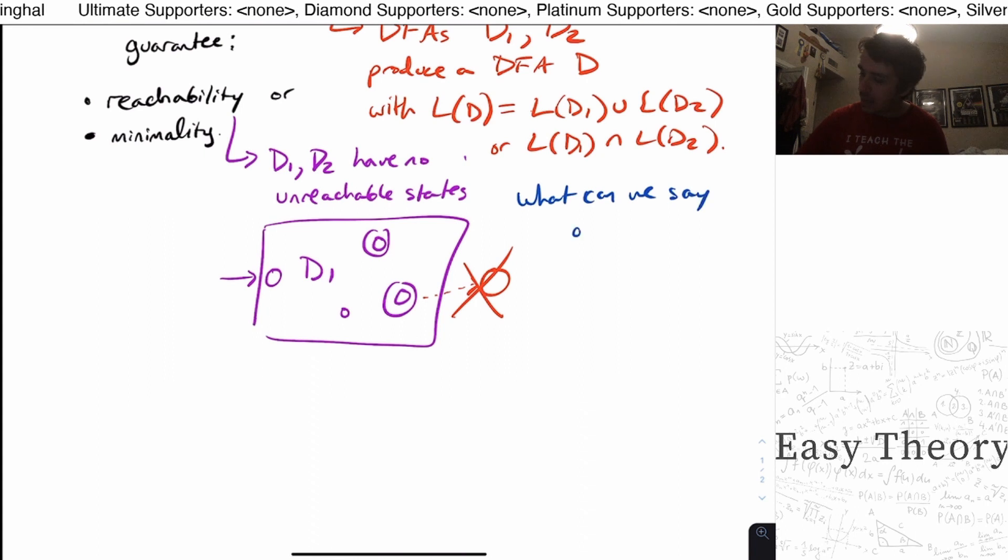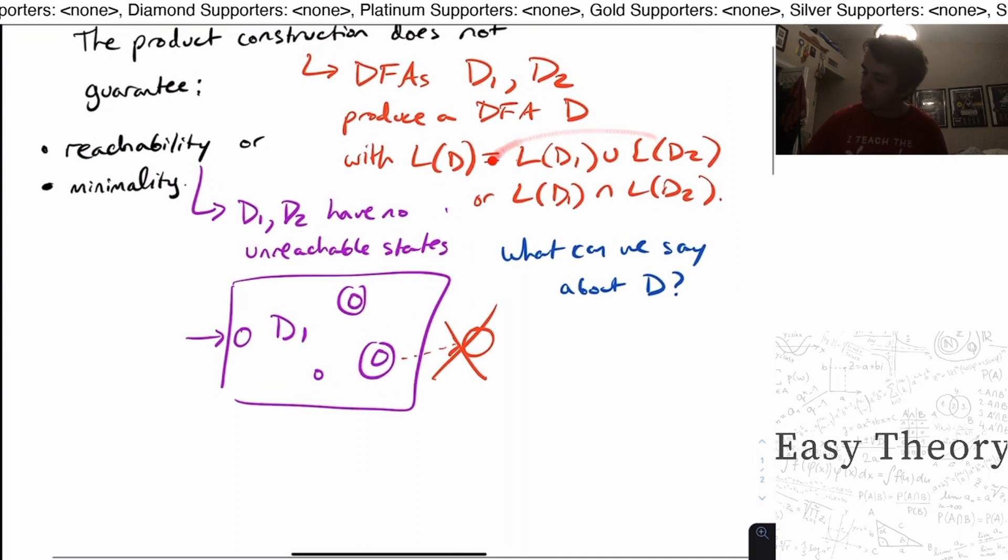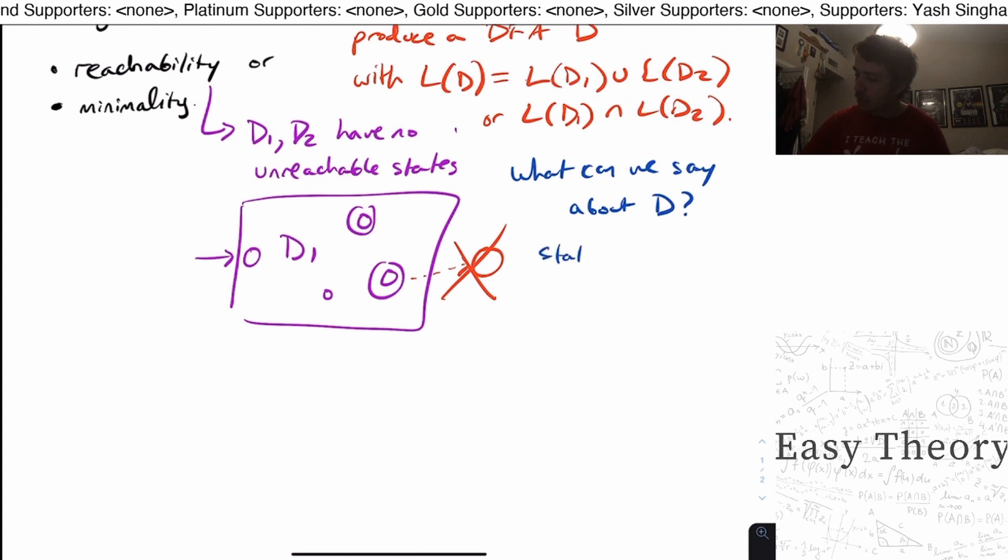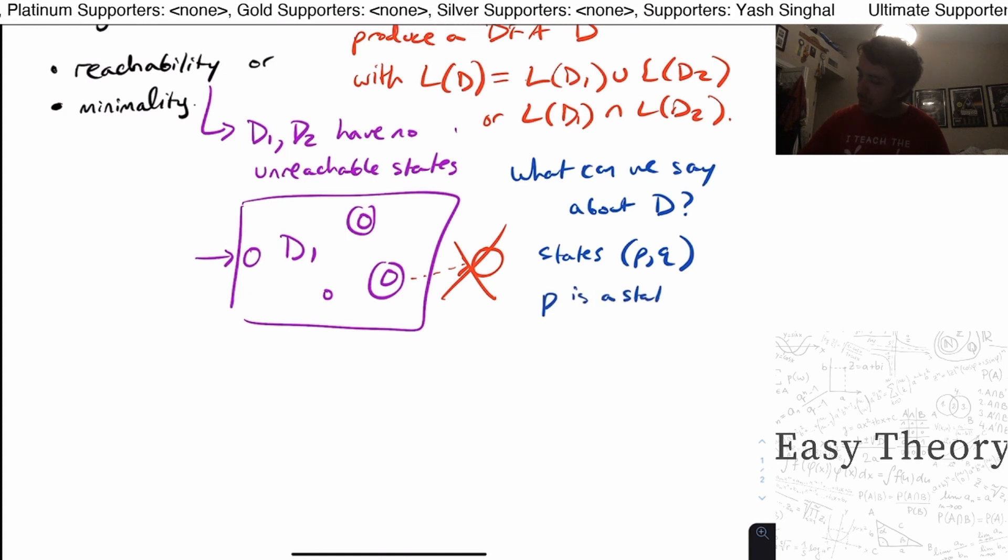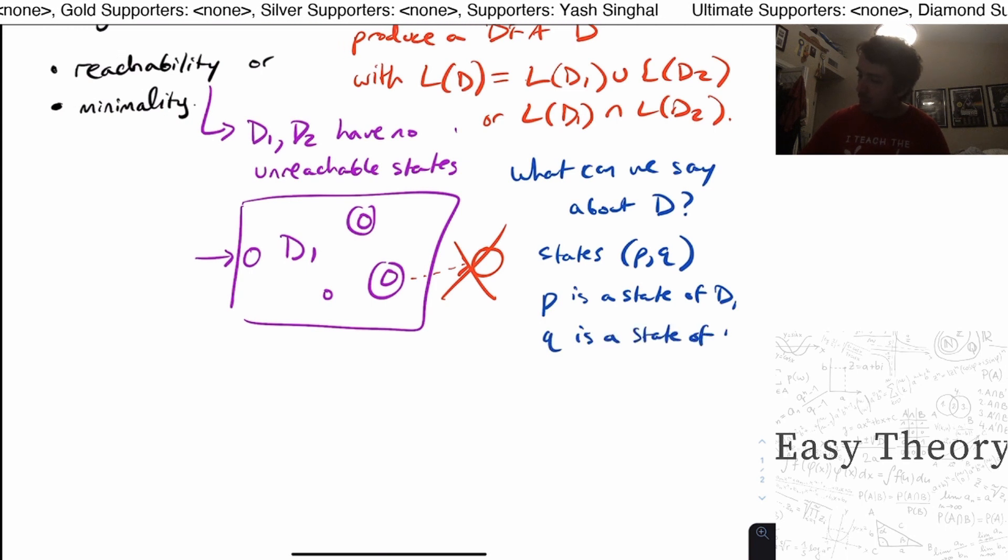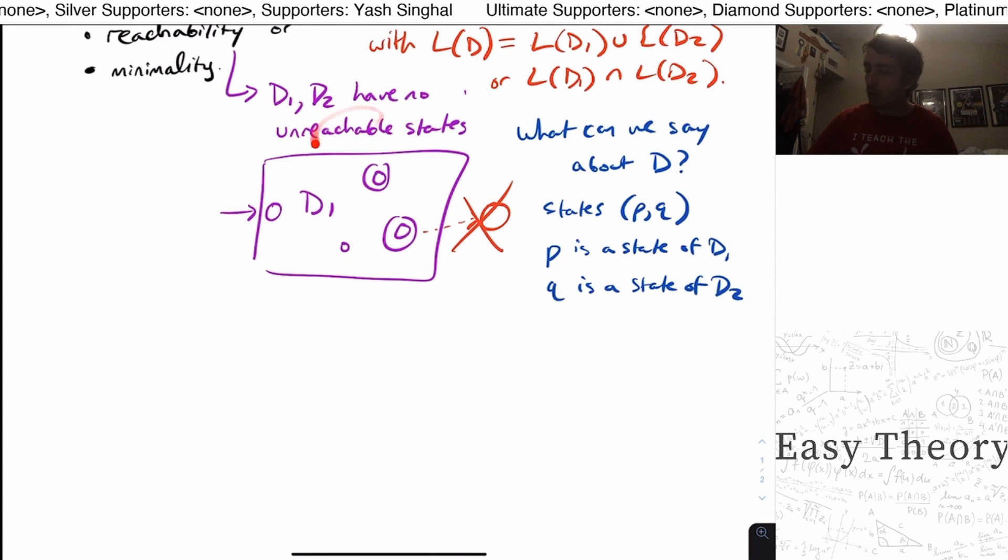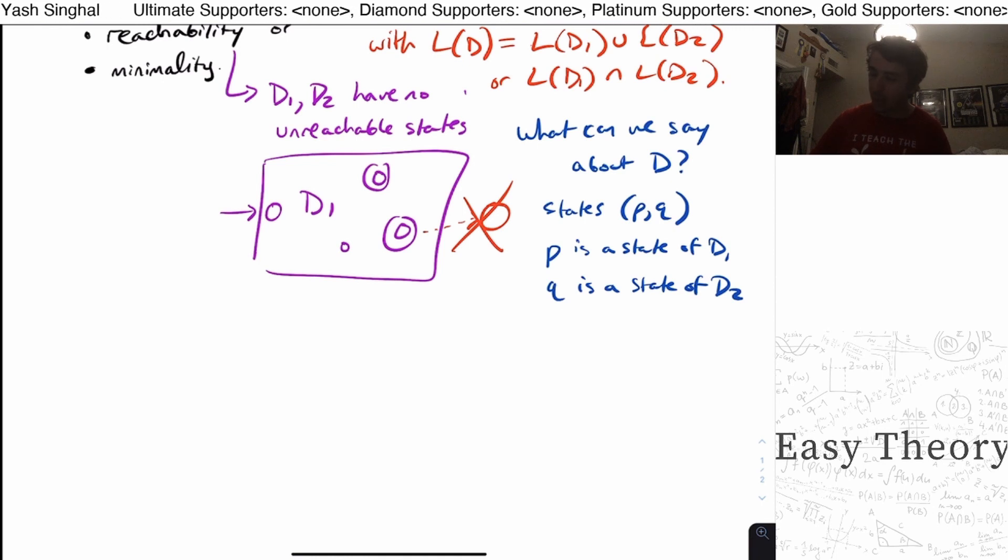So what can we say about the DFA D that we make in the product construction? Remember that the product construction always has states of the form PQ, where P is a state of D1 and Q is a state of D2. So if D1 and D2 have no unreachable states, then it seems logical that there's no unreachable states in the product DFA. But I'm going to give you a counterexample to show why that's the case.